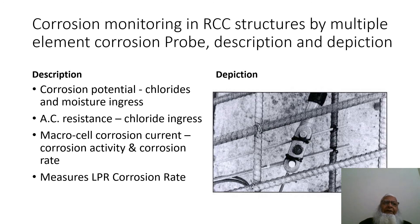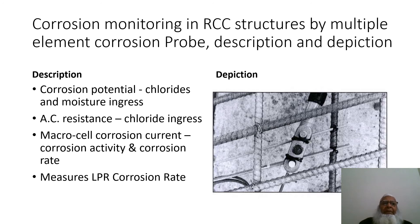Corrosion monitoring in RCC structures by multi-element chromium probe measures corrosion potential, chlorides, and moisture ingress. Acid resistance is used to measure chloride ingress; macro-cell corrosion current, chlorine activity, and corrosion rates are monitored. LPR is used to measure the corrosion rate. The right-hand side shows how this multi-element chromium probe is installed along the rebars inside the RCC structures.